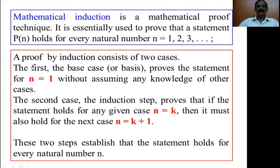A proof by induction consists of two cases. The first case is we have to prove it for n equals to 1. That is the base case or the basis which proves the statement for n equals to 1 without assuming any knowledge of other cases.